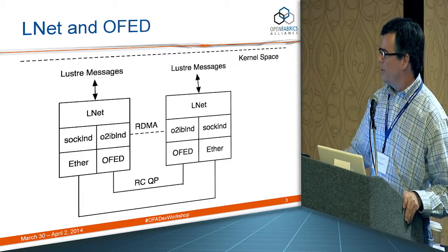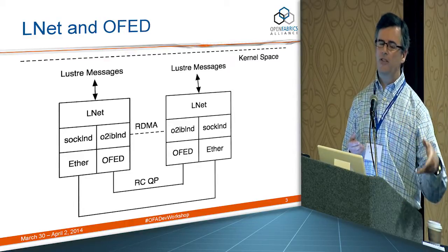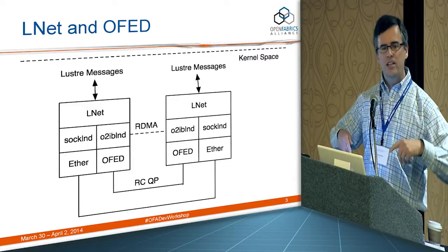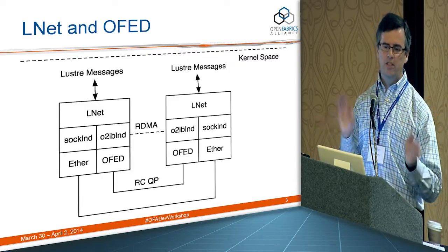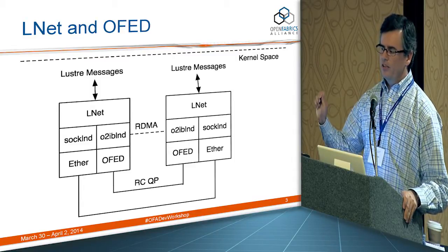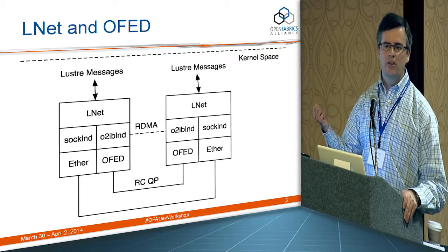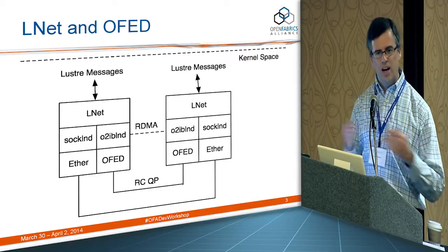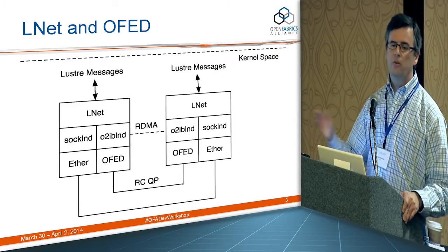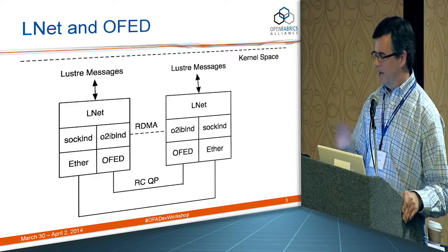If we have multiple interface cards — for example, an Ethernet NIC and an InfiniBand HCA in the same chassis — we can instantiate both and use two different network types simultaneously. If we put LND into forwarding mode, we turn ourselves into an LND router, which allows us to bridge traffic between different fabric types, such as between an Ethernet network and an InfiniBand network.